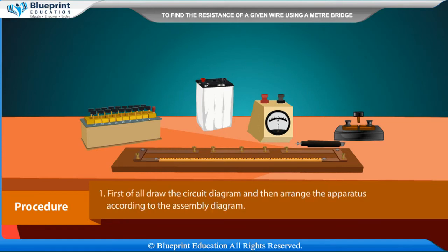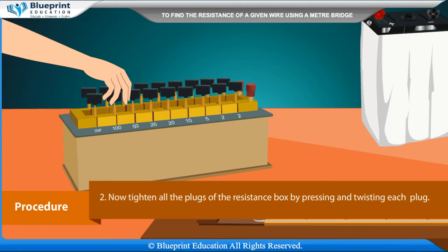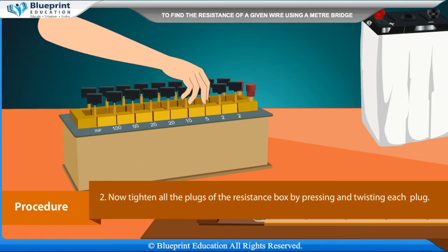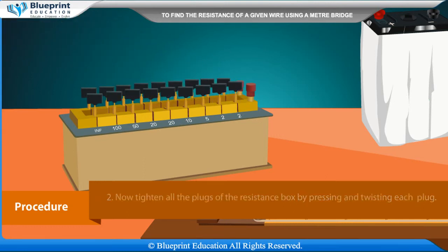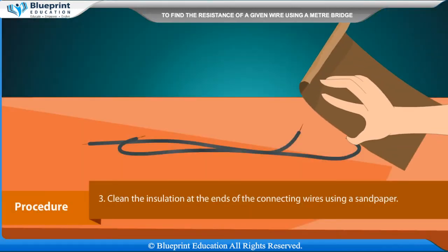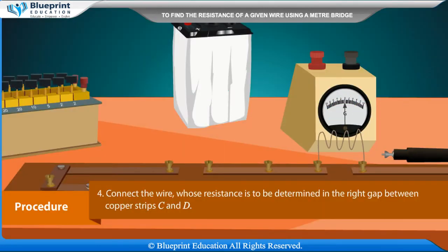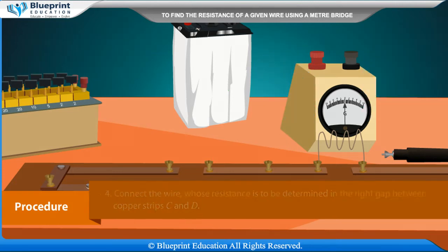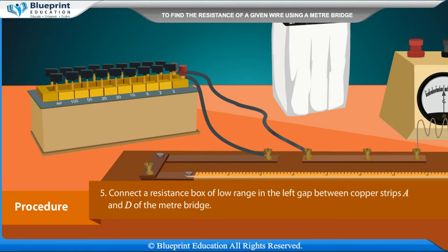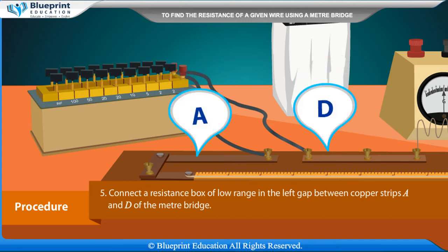Procedure: First of all, draw the circuit diagram and then arrange the apparatus according to the assembly diagram. Tighten all the plugs of the resistance box by pressing and twisting each plug. Clean the insulation at the ends of the connecting wires using sandpaper. Connect the wire whose resistance is to be determined in the right gap between copper strips C and D. Connect a resistance box of low range in the left gap between copper strips A and D of the meter bridge.